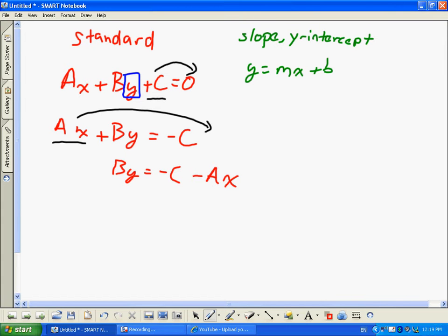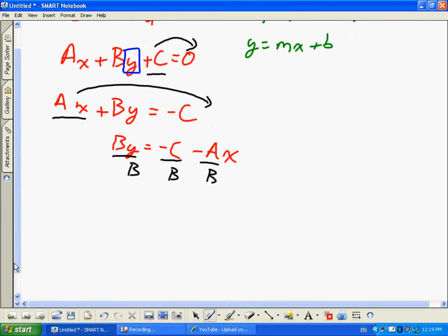This will now become By equals negative C minus Ax. Now, I need to divide by B to get this equal. So I divide B, B, and B. In standard form, to get your slope, if you want to just look at the letters, y is equal to negative C divided by B, negative A over Bx. I'm going to move it over here so we can see the similarities between the two.